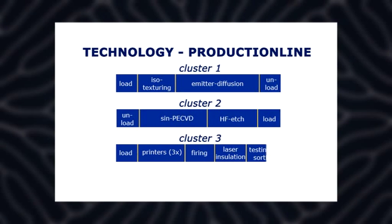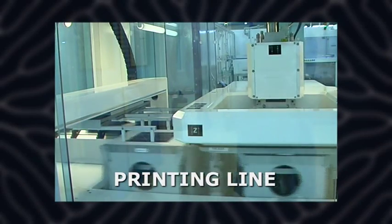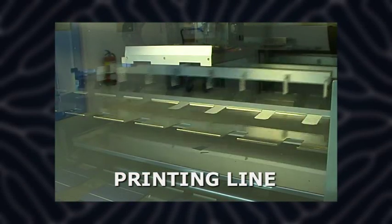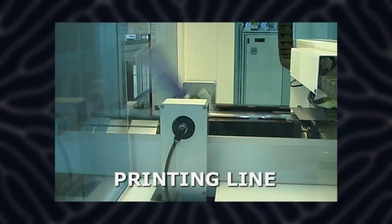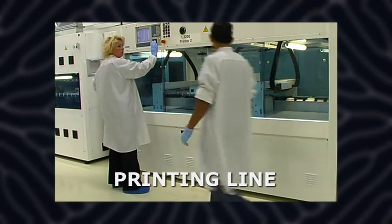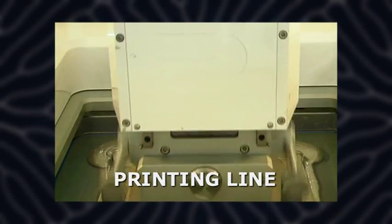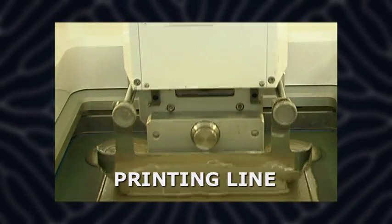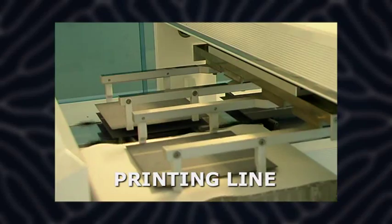In the printing section, first of all the front grid and the so-called busbars are printed with silver paste. On the rear side, two busbars are printed as well. These silver prints are necessary to connect the cells to each other via a soldering process later in the module.